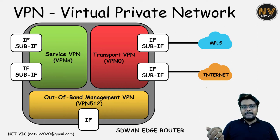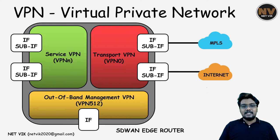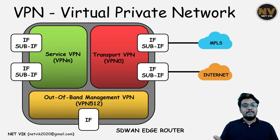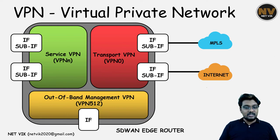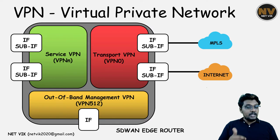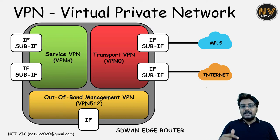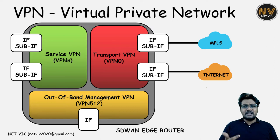The next is the service VPN — this is where the LAN links get connected. For example, your core switch in the site may terminate on this VPN. We can have multiple service VPNs. Think of your office: if you have user machines and voice traffic, we can create one service VPN for user data and one more service VPN for voice, each assigned a different VPN number.